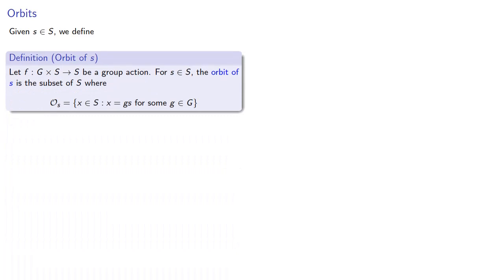Now, once we define these group actions, we can consider the following ideas, beginning with an orbit. So given some element S in our set, we define the orbit as the elements of our set S where X equals GS for some G in our group G. Now, it's important to note that the orbit lives in our set S, but it's based on elements in our group G.